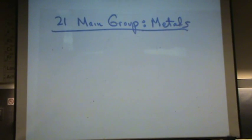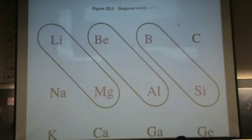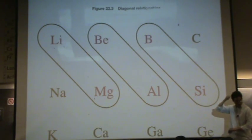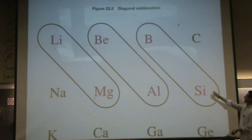Diagonal relationships exist. So even diagonal on the periodic table has similarities. Here's a couple. So you want to know the diagonal relationships. So beryllium and aluminum have some similarities. Boron and silicon. I'll be pointing out a couple of these from time to time.